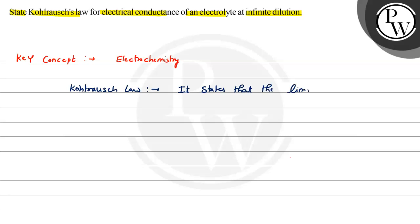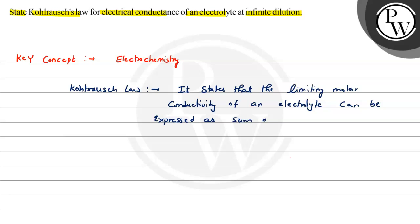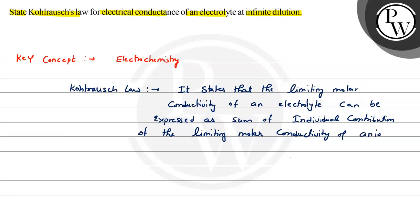The law states that the limiting molar conductivity of an electrolyte can be expressed as the sum of individual contributions of the limiting molar conductivity of its ions — the cation and the anion.